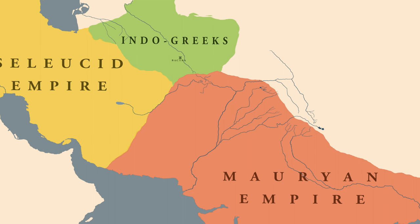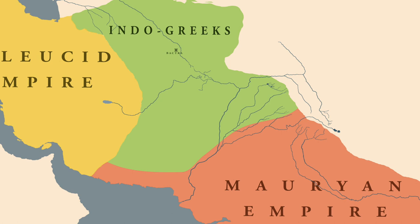With the death of Ashok, the western part of the Mauryan empire was not being actively protected from the Greek incursions that had started. Because they could not defend the western half from these Greek incursions, there was a sense of dissatisfaction towards the Mauryan emperors who came after Ashok. And it was this sense of dissatisfaction which Pushyamitra Shunga took advantage of.